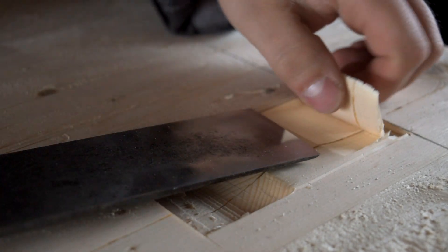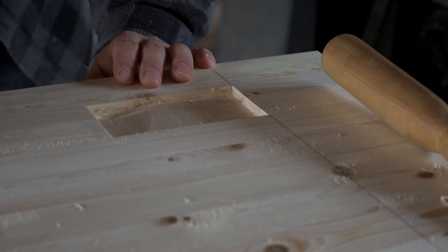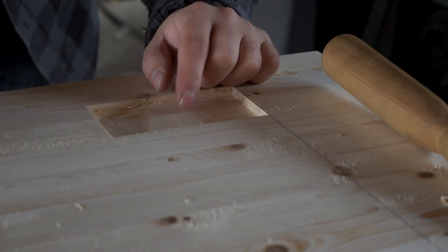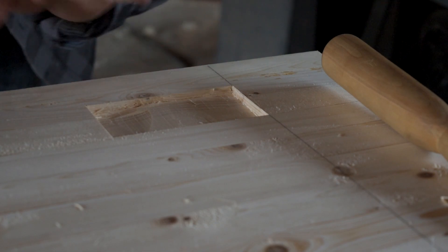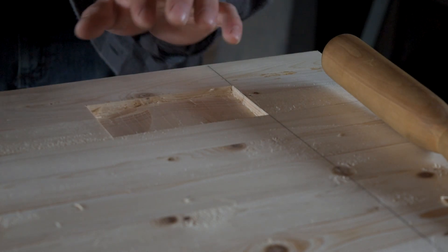I'm laying out the top of my table here for my mortises. The mortises are the female portion of the mortise and tenon joint, the tenons being the male, and that's what we cut in the last video.